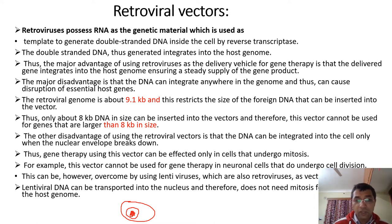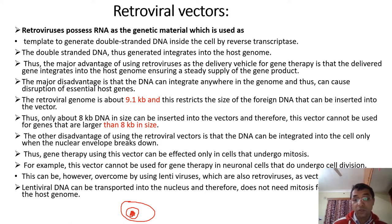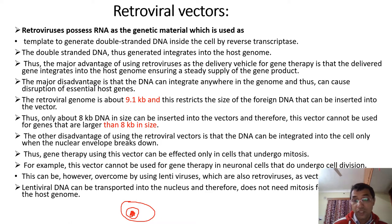This gene therapy is applicable only to cells with mitotic activity. For example, neurons are present in the G0 stage — they have no mitotic activity, having ceased division. Therefore, for neurodegenerative disorders, we cannot use retroviral vectors. These vectors can only be used for cells that have mitotic activity.